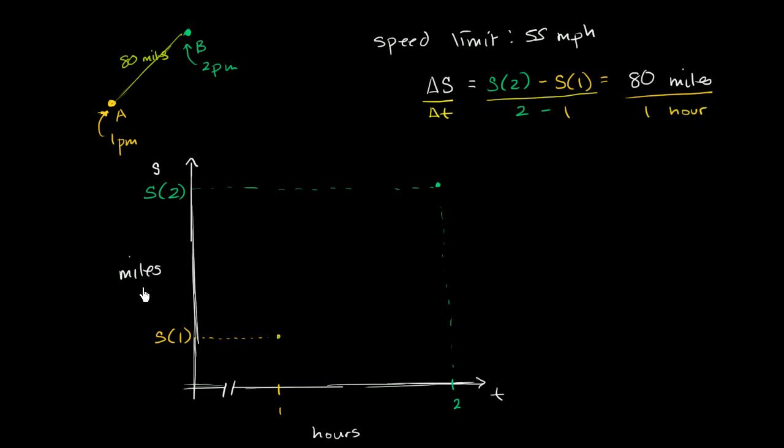Or we could say that the slope of the line that connects these two points, the slope right over here is 80 miles per hour. Slope is equal to 80 miles per hour. Or you could say that your average velocity over that hour was 80 miles per hour.